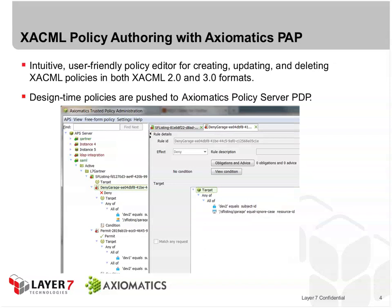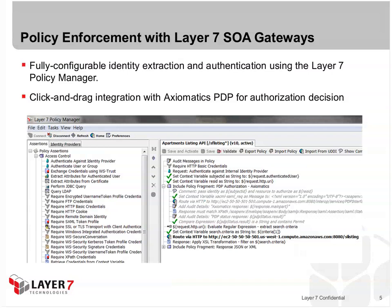In the Axiomatics policy authoring point, you have an intuitive, user-friendly policy editor for creating, updating, and deleting XACML policies in both XACML 2.0 and 3.0 formats. Once you create those XACML policies at design time, they're pushed to the Axiomatics policy server PDP, and that's what makes the decision at runtime. On the Layer 7 side, you have a fully configurable identity extraction and authentication mechanism using the Layer 7 policy manager. You can drag in credential extraction and how you want to authenticate those credentials, then click and drag to integrate with the Axiomatics PDP for an authorization decision.